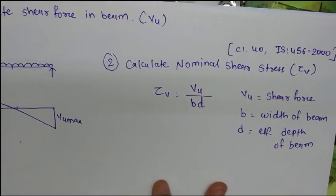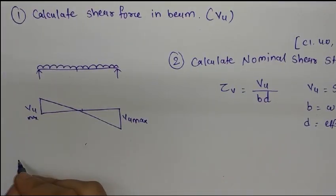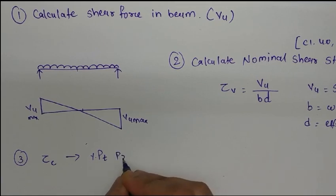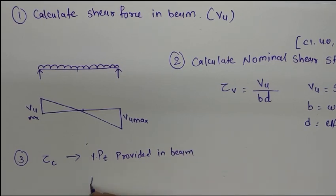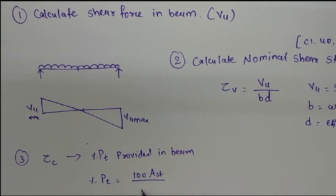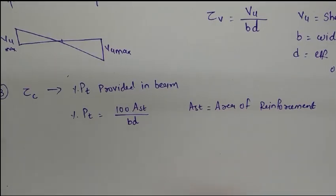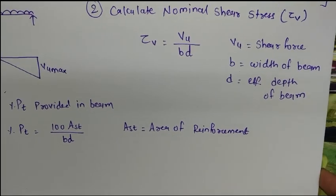Step number three is to calculate τc. This τc depends upon the percentage of reinforcement provided in the beam. To calculate the percentage of reinforcement, we use the formula: 100 × AST upon BD, where AST is the area of reinforcement provided, B is the width of the beam, and D is the effective depth.